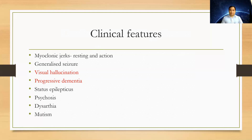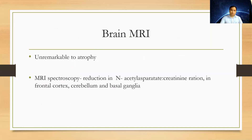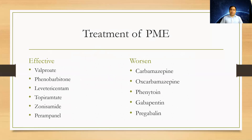There can also be concomitant psychosis, dysarthria, and mutism. On EEG, epileptiform discharge is seen throughout all leads at around four hertz on a slow background. MRI is unremarkable; some patients may have atrophy. MRI spectroscopy may show reduction in N-acetyl aspartate to creatinine ratio in the frontal cortex, cerebellum, and basal ganglia. Skin biopsy from regions with abundant sweat glands can show Lafora bodies.